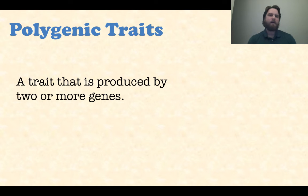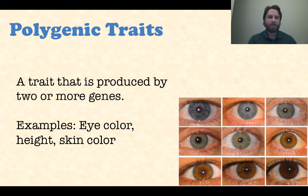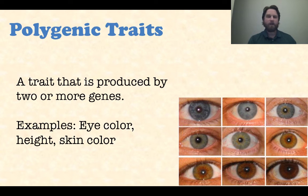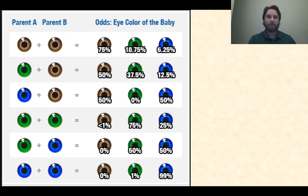The last topic is polygenic traits — a trait produced by two or more genes. Great examples are eye color, skin color, and height. Many genes determine whether you have blue eyes, light blue, green, hazel, light brown, or dark brown eyes. There's a whole array of skin colors as well, and we're not just tall or short — there's a whole range of heights. These are all controlled by many genes.